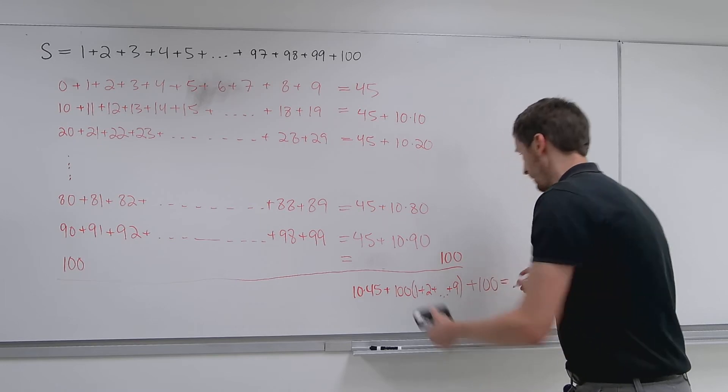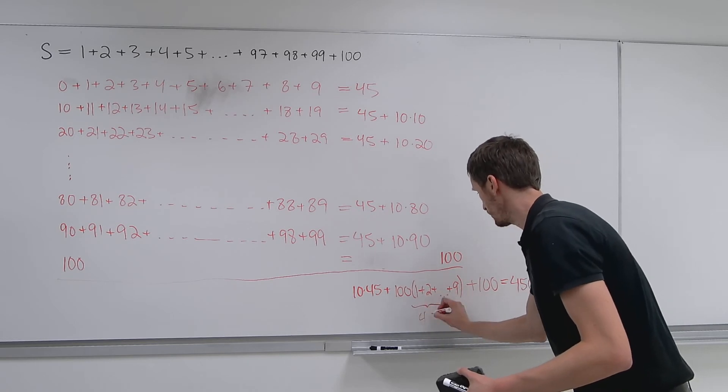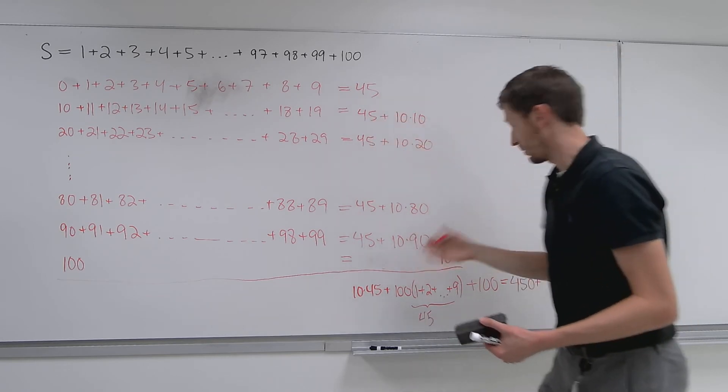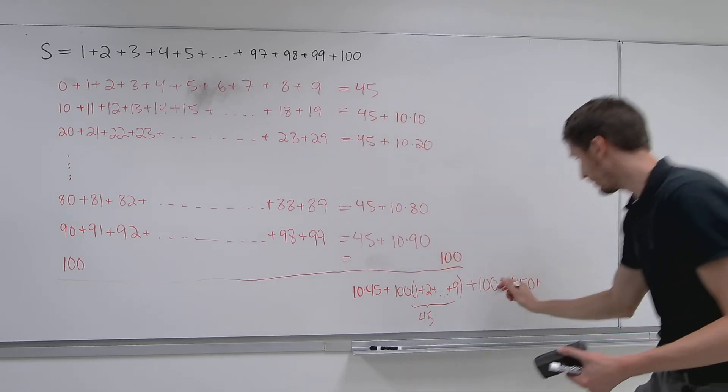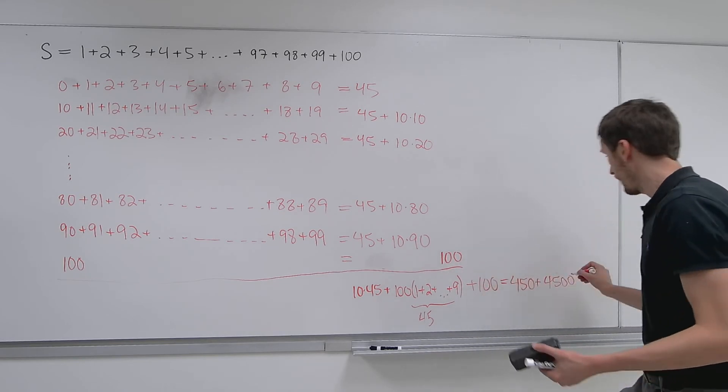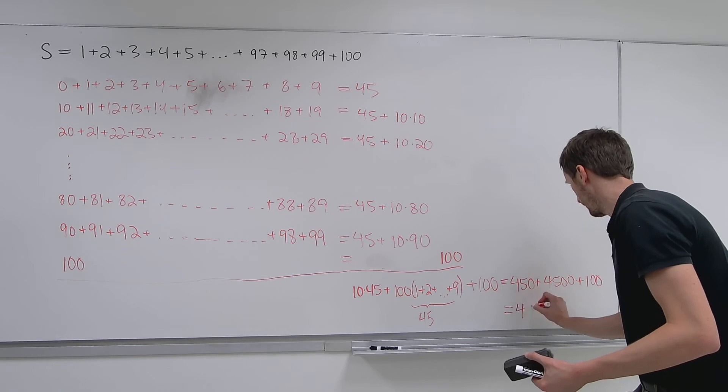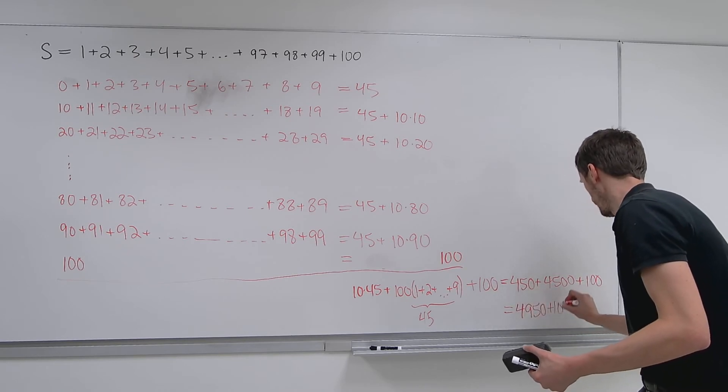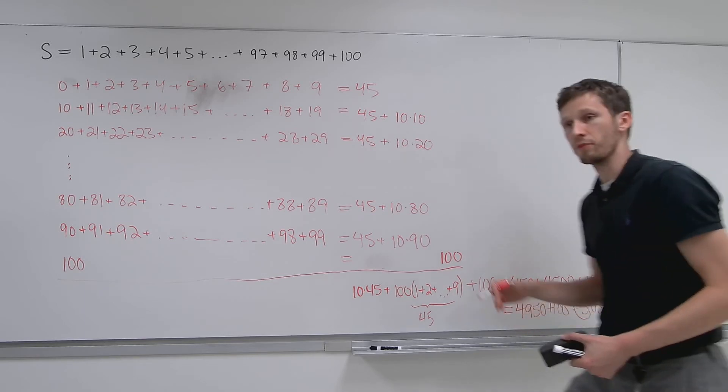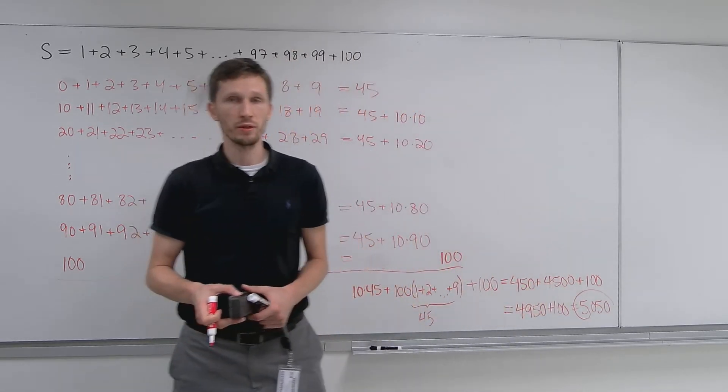And then plus that 100 there. And guess what that's going to equal to? Well, it's 450 plus, that's 45. We know that. We're using that all the time here now, for every one of those rows, we use the 45. The 1 through 9 sum. So we get plus 4500, and then plus the 100 extra. And so that's equal to, you see, that's 4950 plus the 100. And that's going to equal to 5050. That is the result. And that is the sum of the first 100 positive integers. Kind of cool, right?